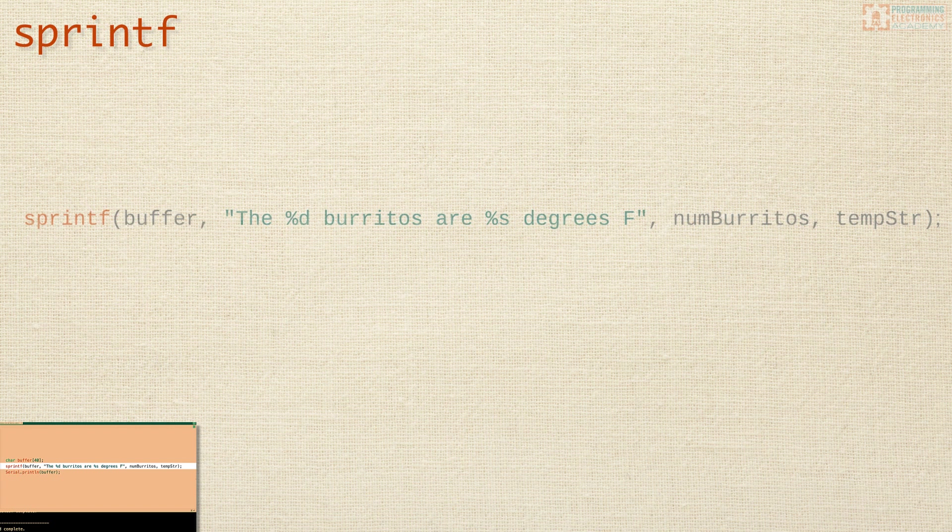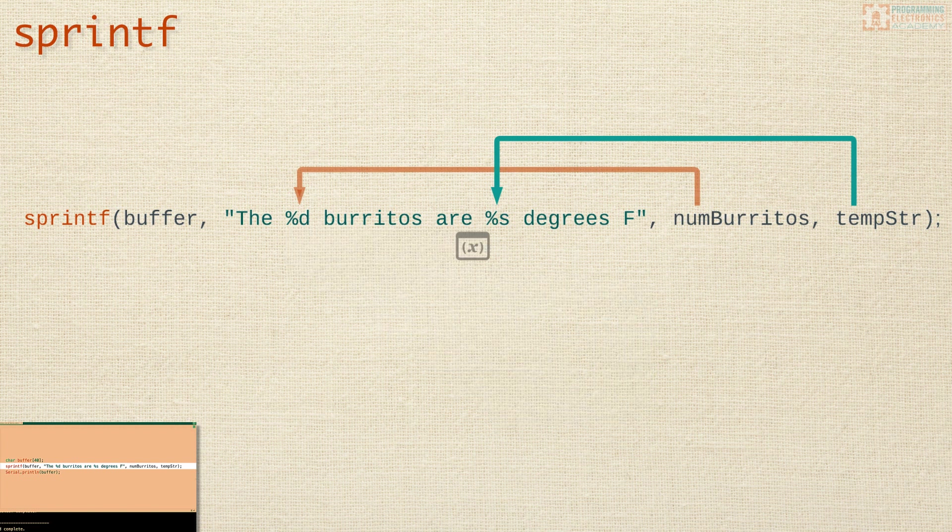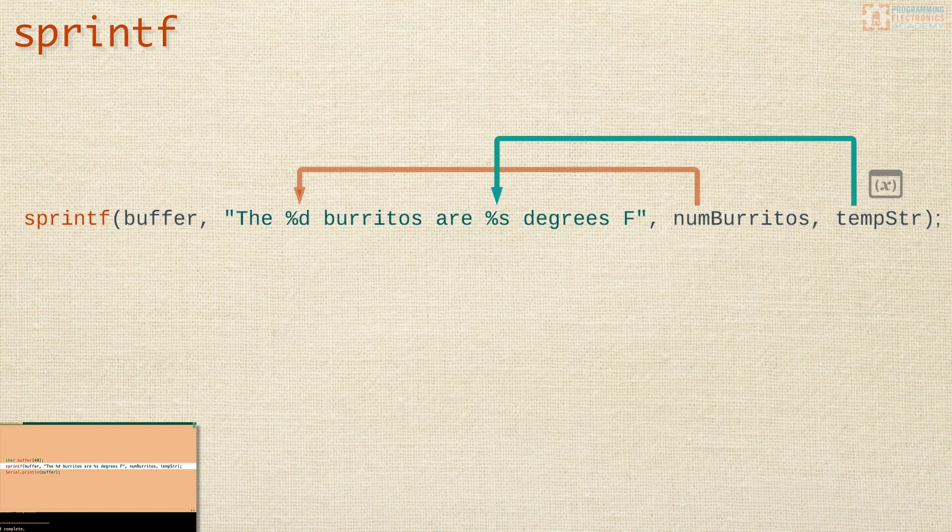So where does sprintf actually find the variables to insert? Well, we actually don't have to look too far, because those are the arguments added right after the string. For every format specifier, you must pass a matching value. These values are added as additional arguments to sprintf, each one separated by a comma.